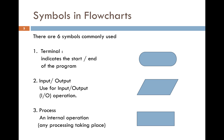In our pseudocode example we knew that we need to start, take input, perform arithmetic operations and processes, and display output. Let's see how we can do this with symbols. There are six symbols commonly used. Symbol one is the terminal — it indicates the start and end of the program.